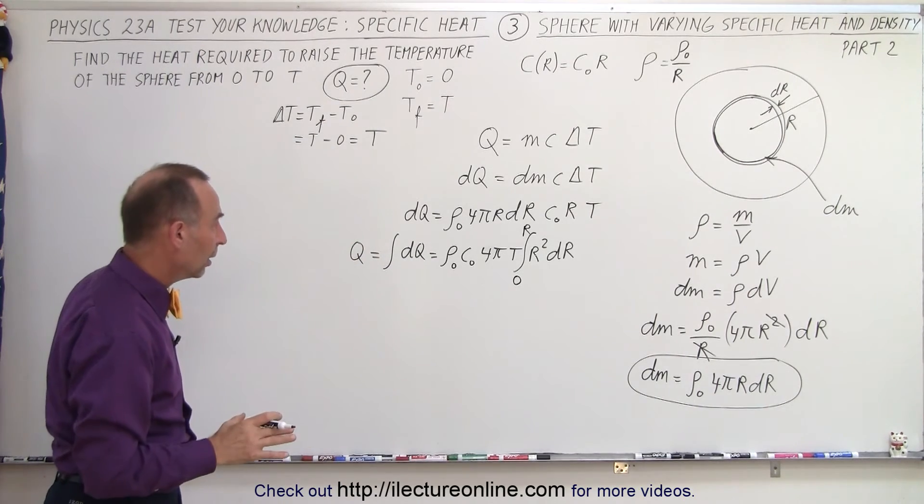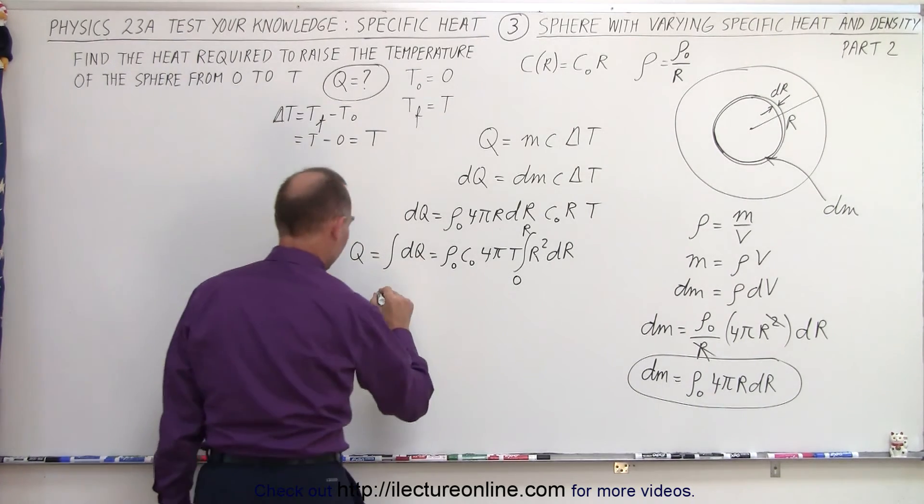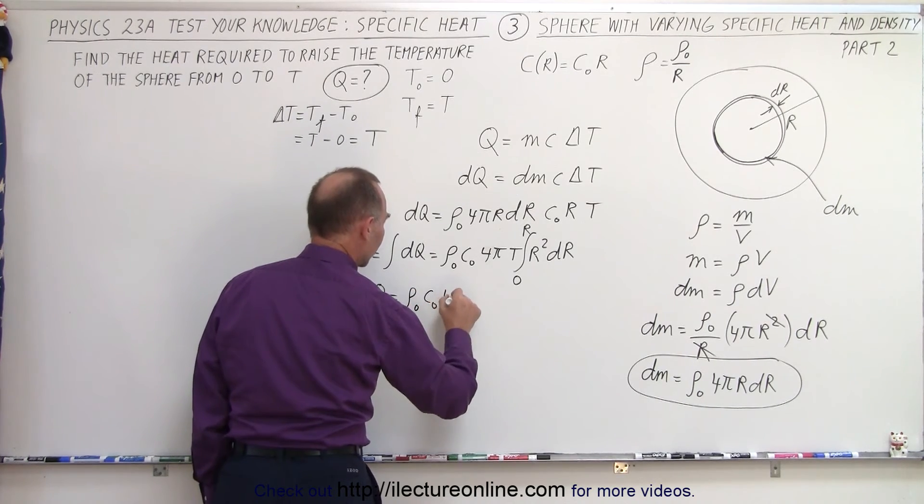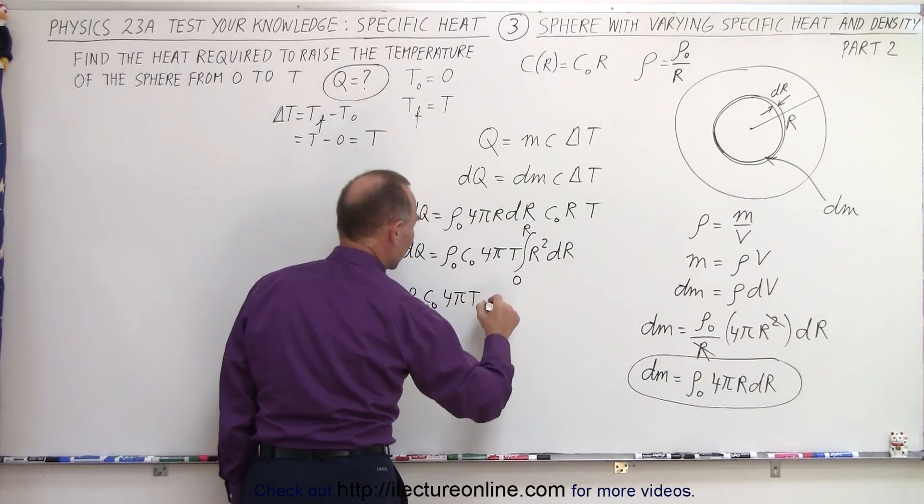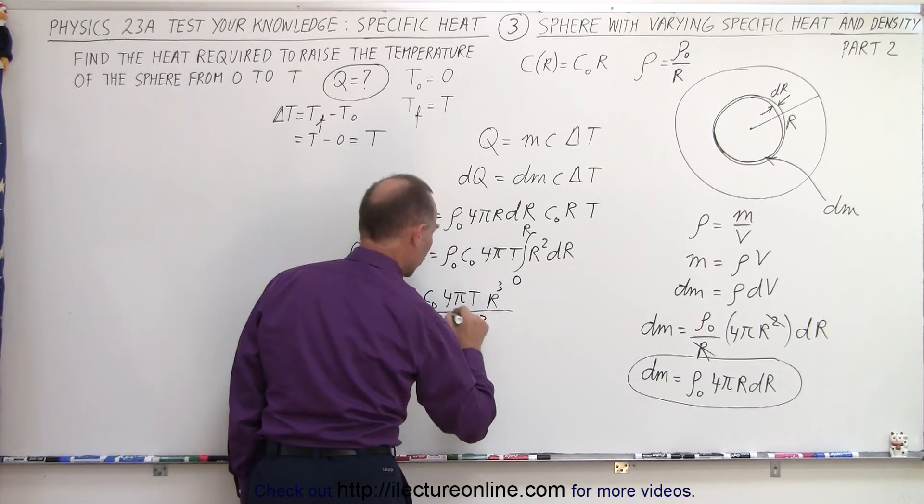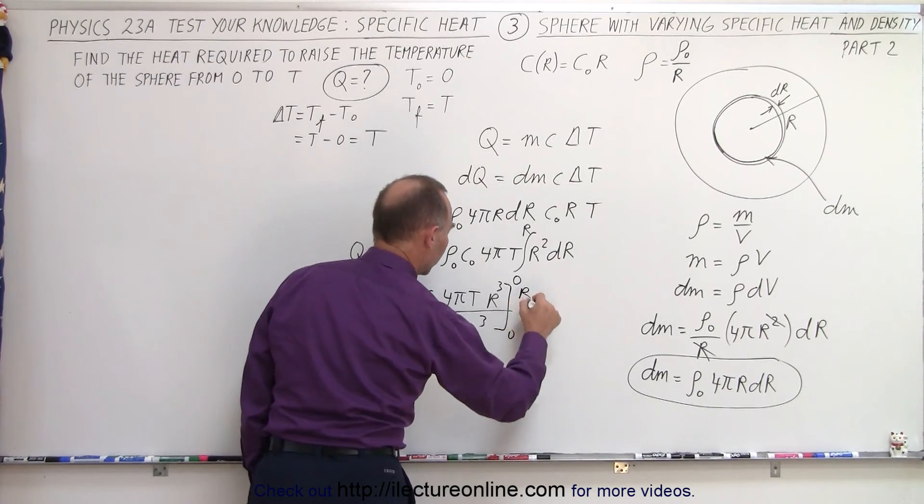Okay, so now let's integrate and see what we get. So Q is equal to density sub naught, C sub naught, 4 pi T times r cubed over 3. And we're going to evaluate that from 0 to R.